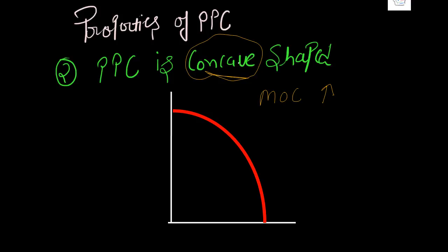So the second property that you need to remember is PPC is concave shaped that shows that every single time you are sacrificing good Y to produce good X, more of good Y was being sacrificed, which was also understood in the marginal opportunity cost illustrations that we had taken, wherein you got to know that MOC was always increasing. So this is pretty much clear and simple.